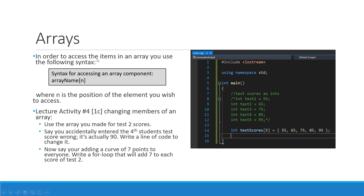To access items in an array, use the syntax: arrayName[n], where n is the position of the object you want to access. We can demonstrate this in the next part of the lecture activity — Part 1c, changing members of an array. We'll continue using the testTwoScores array. Say you accidentally entered the fourth student's test score wrong and it's actually 90 — write a line to change it. Then write a for loop to add a seven-point curve to everyone.